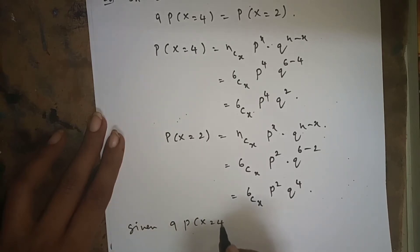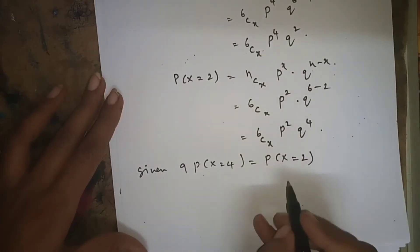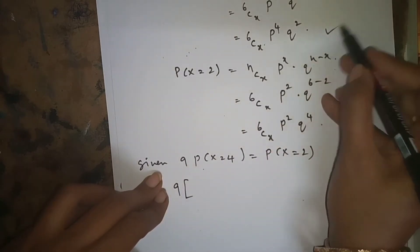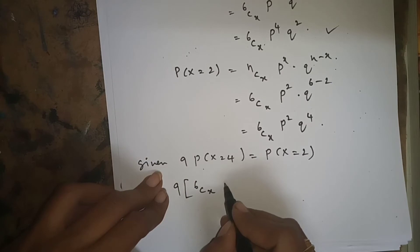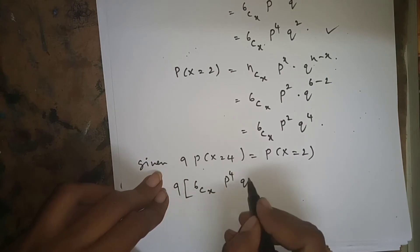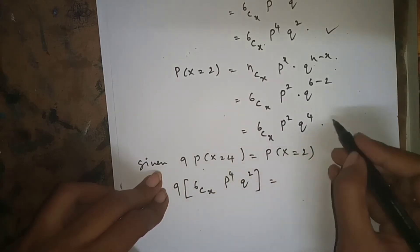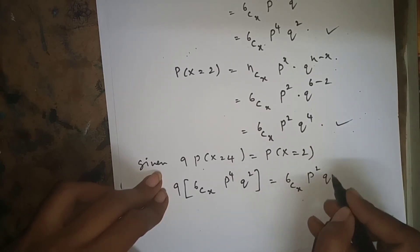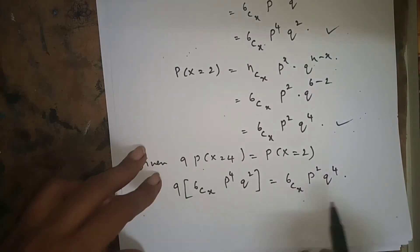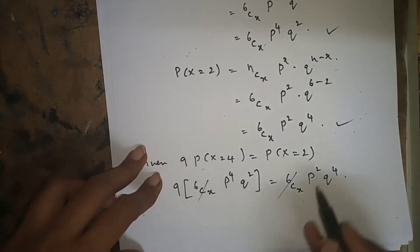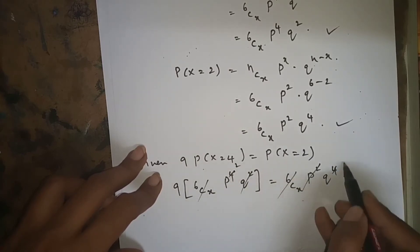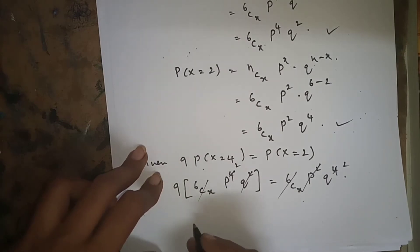Now applying the given relation 9 into P(x=4) = P(x=2): 9 * 6C4 * p^4 * q^2 = 6C2 * p^2 * q^4. Both sides have 6Cx terms that cancel, and p^2 and q^2 also cancel, leaving us to simplify further.